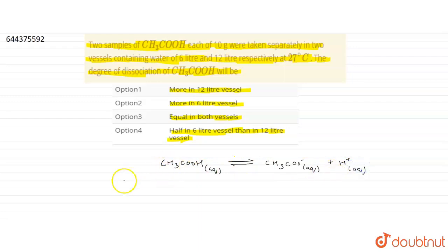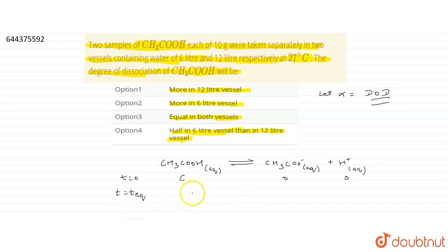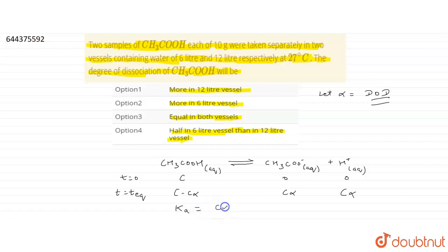At t equals zero, the initial concentration of CH₃COOH is C, and the concentrations of products are zero. Let alpha be the degree of dissociation. At equilibrium, CH₃COOH concentration becomes C minus C·alpha, and the concentrations of CH₃COO⁻ and H⁺ are each C·alpha. The dissociation constant Ka equals C·alpha times C·alpha divided by C minus C·alpha.